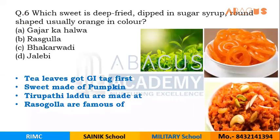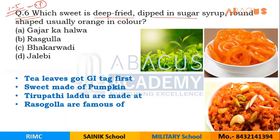We go to question number six — the number is six because questions one to five have already been covered in the first video, which you can go and watch. Now look at this question: which sweet is deep fried, dipped in sugar syrup, round shaped, and usually orange in colour? This clue is describing the process of making a sweet — a mithai.